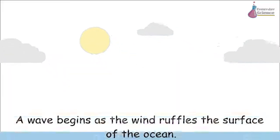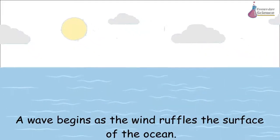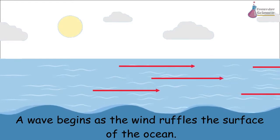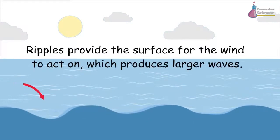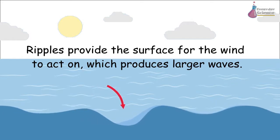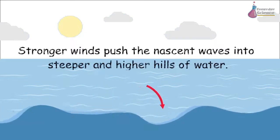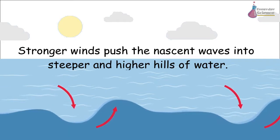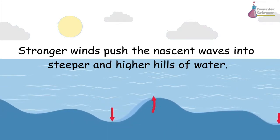A wave begins as the wind ruffles the surface of the ocean. Ripples provide the surface for the wind to act on, which produces larger waves. Stronger winds push the nascent waves into steeper and higher hills of water.